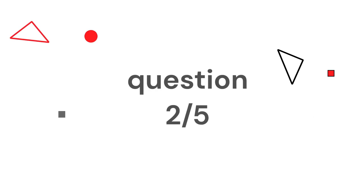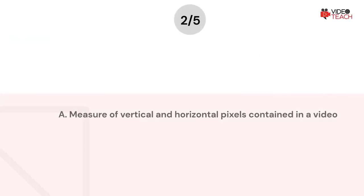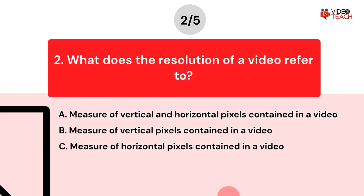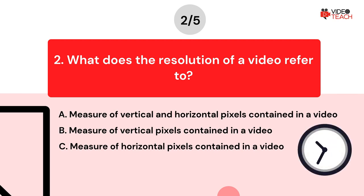Question number two. What does the resolution of a video refer to? Option A: Measure of vertical and horizontal pixels contained in a video. Option B: Measure of vertical pixels contained in a video. Option C: Measure of horizontal pixels contained in a video. Now you have about 15 seconds to think about your answer.